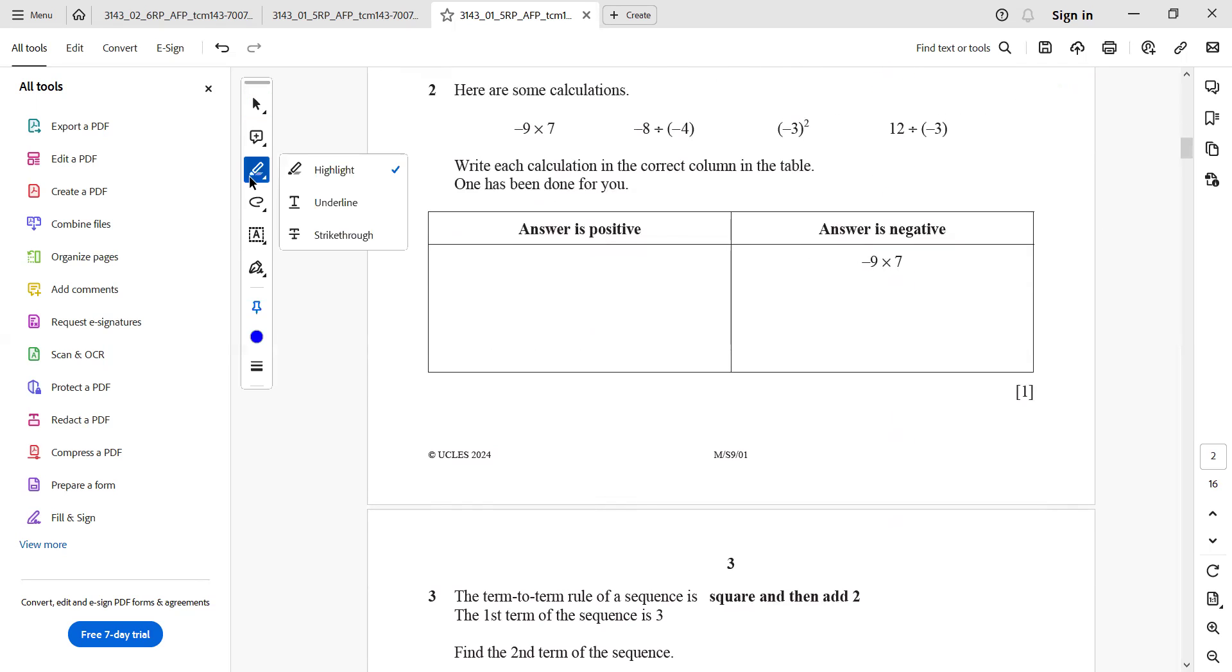Now it's question number 2. Here are some calculations. Write each calculation in the correct column in the table. One has been done for you. Answer is negative. You can see that when two numbers are being multiplied or divided with different signs, the answer is always having a negative sign. So that's why negative 9 times 7 has been written in the negative column. We need to find another pair in which two of the terms would be having different signs, one positive and another negative. That is going to be the third one, 12 divided by negative 3.